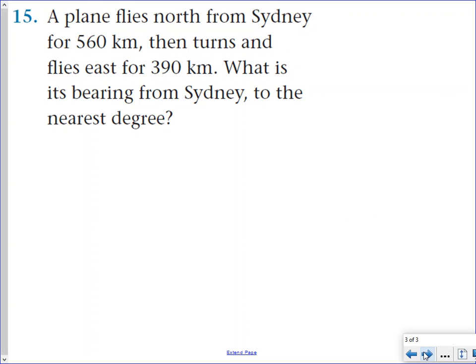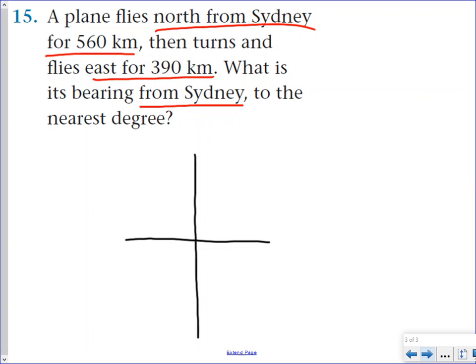Anyway, lastly, I just want to do this question as well. We have a plane flies north from Sydney, so north from Sydney for 560 kilometers, then turns and flies east for 390 kilometers. What is its bearing from Sydney to the nearest degree? Well again, with most of these questions, we're going to start by drawing a diagram with our compass. So the best thing to do is just make it nice and big. And we have a plane flying north from Sydney, so our starting point is Sydney. And we went north, 560 kilometers, so we went this way, 560 kilometers. And then, let's call this point A, that was like our first point. And then it turns and flew east for 390 kilometers.